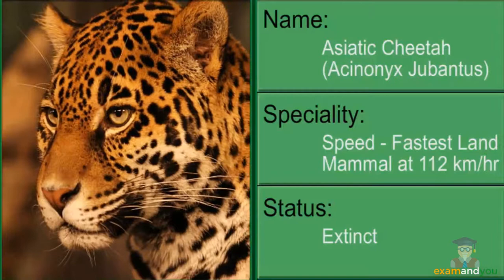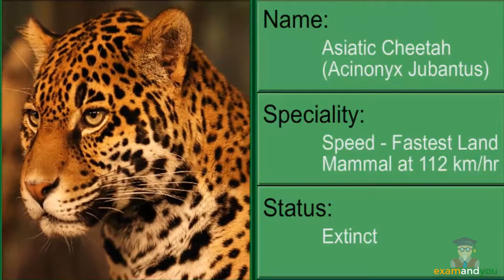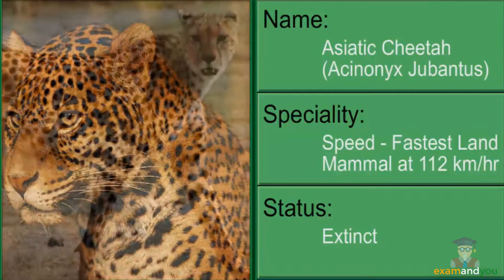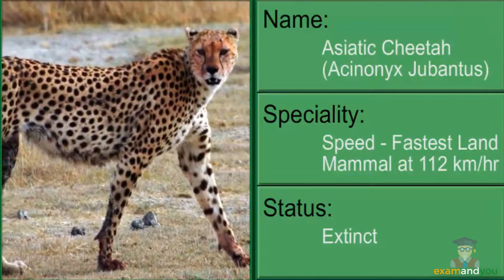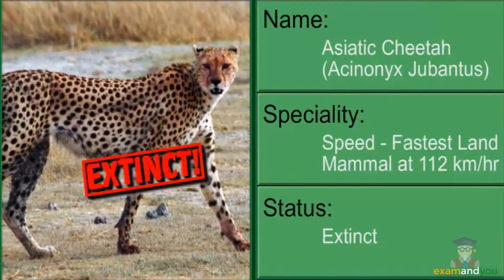The Asiatic cheetah is an exotic cat with distinguishing teardrop markings on its face. It was once found throughout Asia. It became extinct in India in 1952 and is nearly extinct in other parts of the Asian continent, due to loss of habitat and prey.